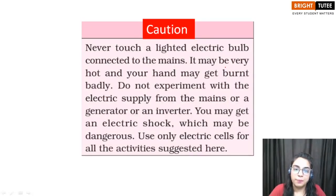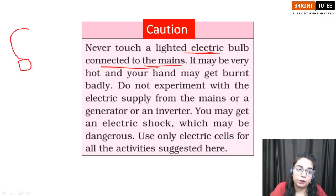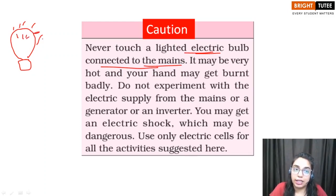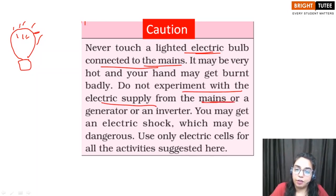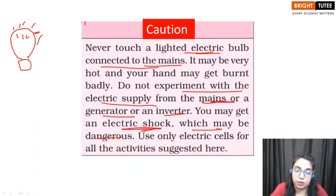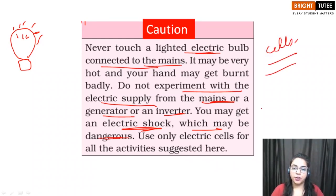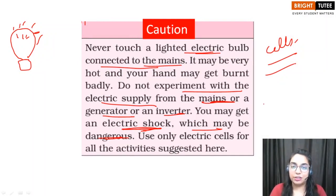A caution: you should never touch an electric bulb connected to the mains because it can be very hot — we will discuss the heating effect of electric current in this chapter. Also, you should never experiment with the electric supply from the mains, generator, or inverter, because you can get an electric shock and it can be very dangerous. For any activity in this chapter, we are going to use only cells. This was all about the introduction part of this chapter. Thank you so much for your attention.